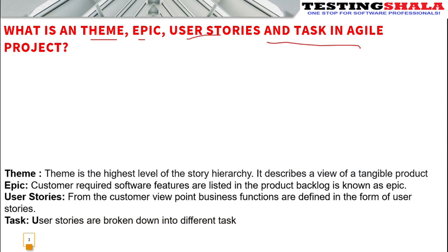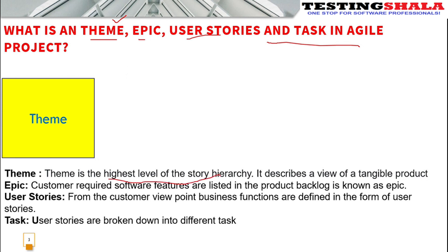A theme is the highest level of the user story hierarchy — the top-level hierarchy for any given user story. Basically, it represents a view of a tangible product, which is essentially a minimum viable product that can be shippable after implementation. That is all about a theme.